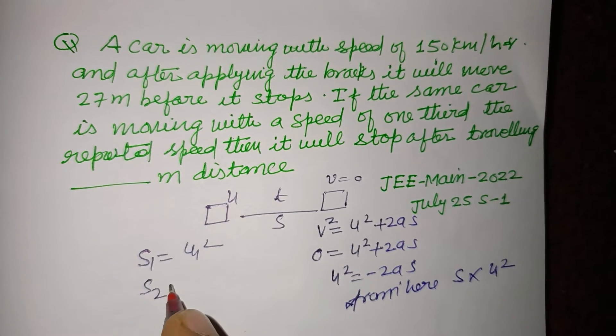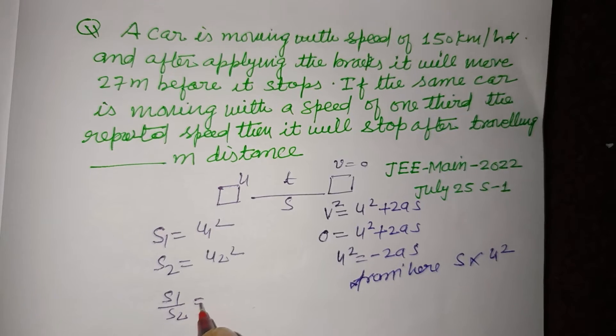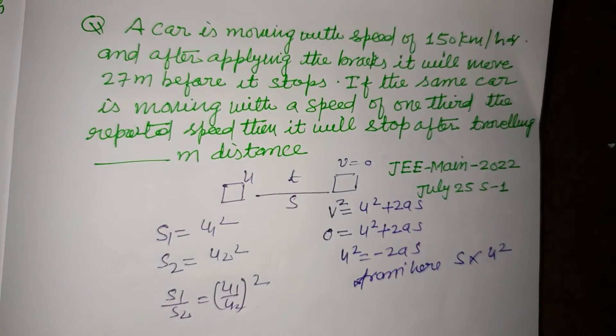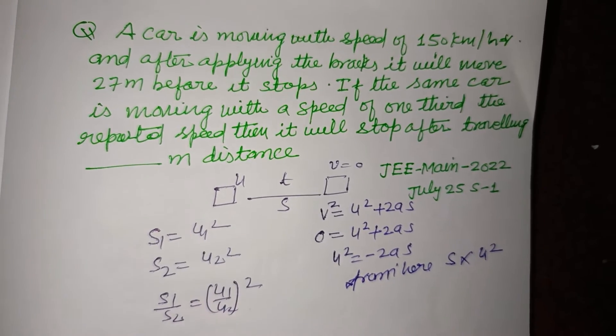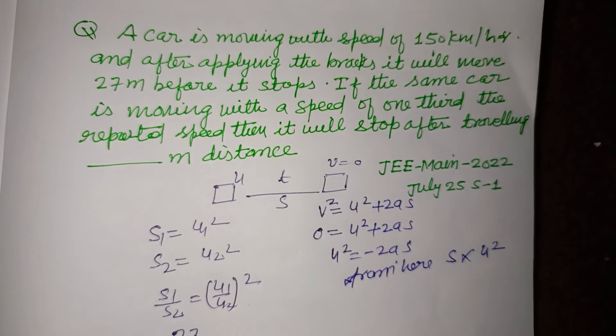So s1 upon s2 equal to u1 upon u2 whole square. Initial distance is 27 meters and final distance, let it be s2.